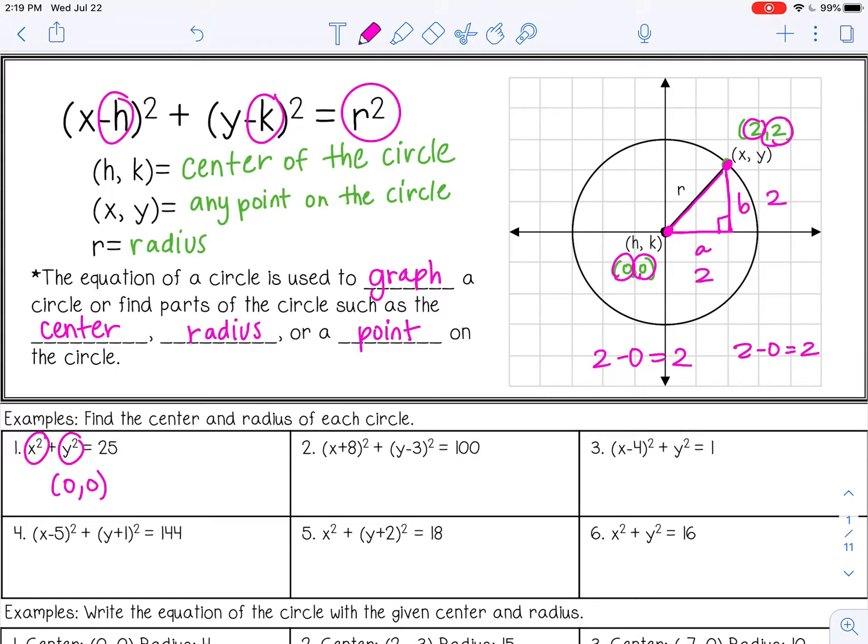Your radius is always going to be at the end after the equal sign, and it's going to be the radius squared. So right now, this is the radius squared. If we just want the radius, we would take the square root, which would be 5.